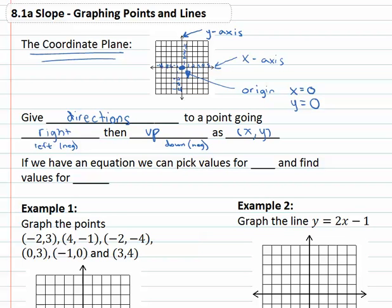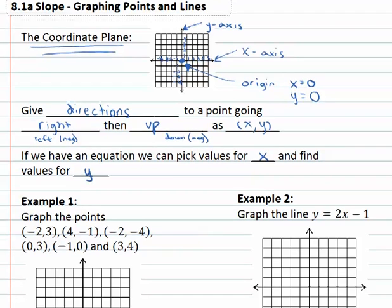If we have an equation that we're interested in graphing, we can pick values for one of the variables, maybe the x, and then find the corresponding values for y that go with that point. Let's look at some examples where we consider this property of addresses.